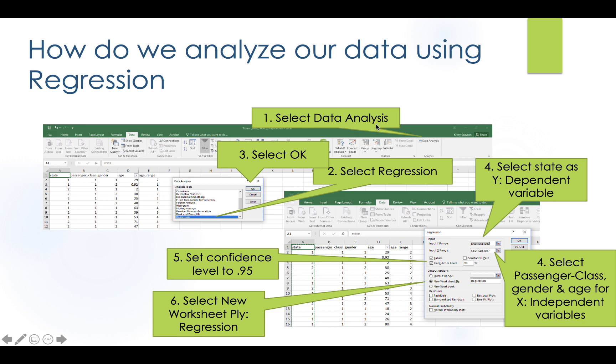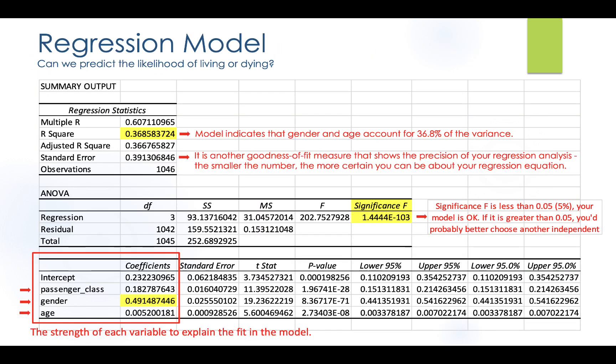All right. So as always, you're going to go into your analyzer and select data analysis, then click on the regression in the list there. Select OK. It's going to pop up another box and you need to enter your dependent variable. Your dependent variable is you're going to select state and now your independent variables are going to be age, gender, and passenger class. So the next thing you're going to want to do is set your confidence level to 95% because we want to be 95% confidence that our statistics are accurate. We feel okay with that. And then you need to name your file regression. So it'll pop up in a new workbook.